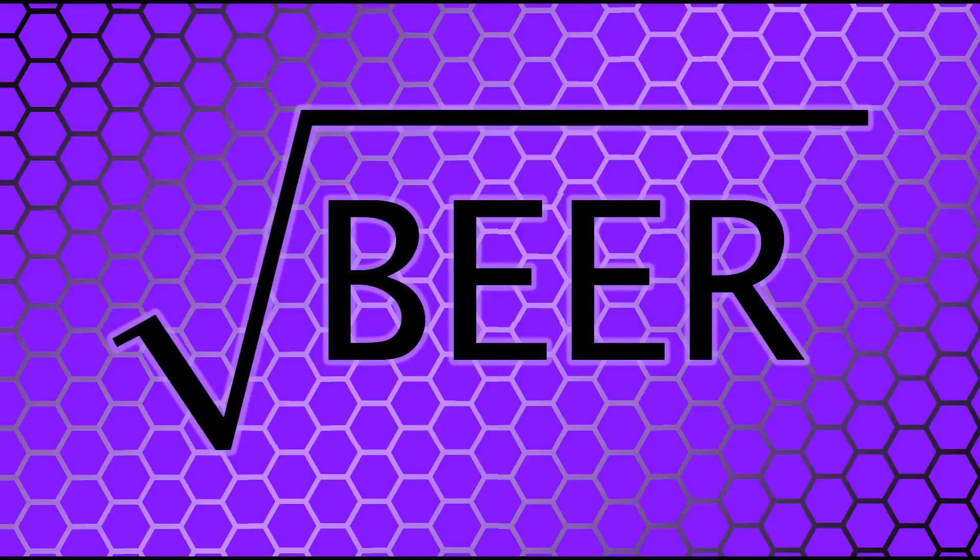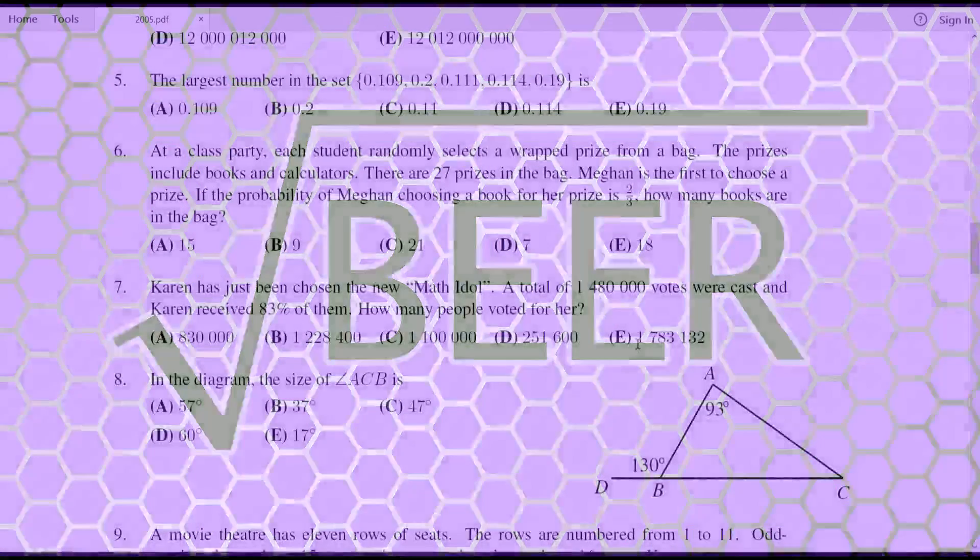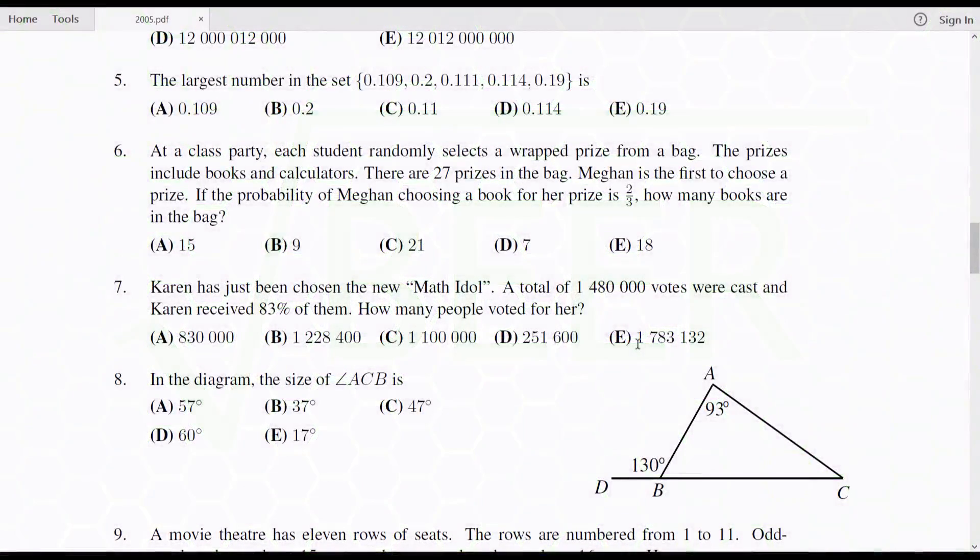Hey guys, thanks for joining me for another wonderful math question. We're looking at the Grade 7 Gauss paper now, and we're all the way up to question number seven. Karen has just been chosen the new Math Idol. A total of 1,480,000 votes were cast and Karen received 83% of them. How many people voted for her?